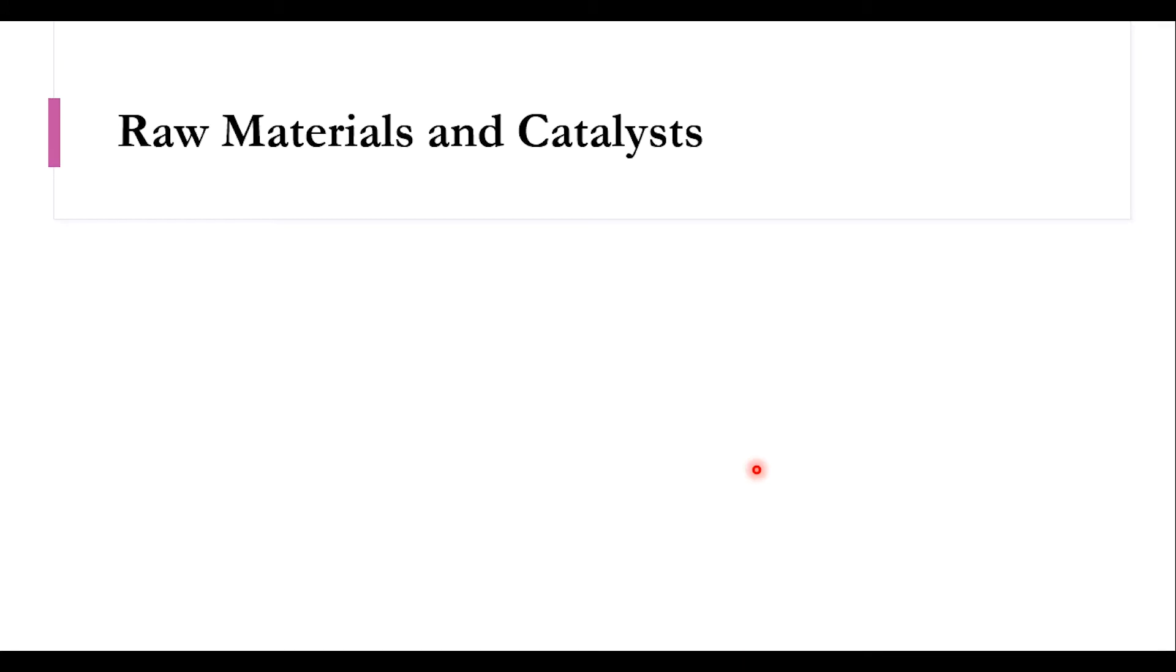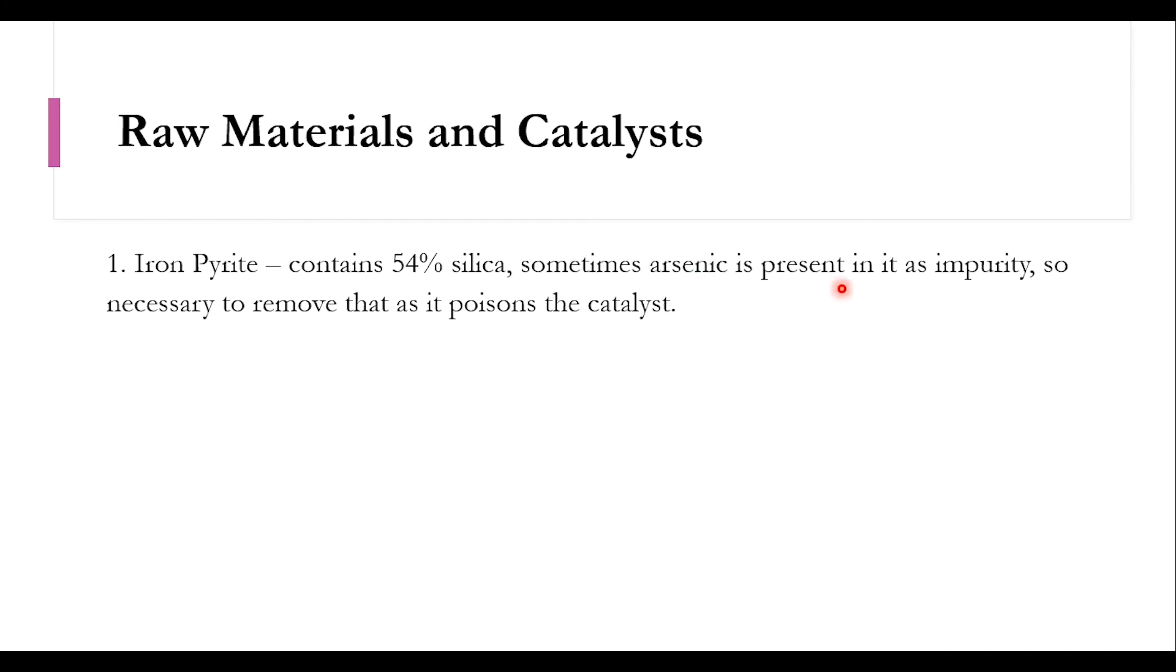For the lead chamber process, the raw materials required are three: number one is iron pyrite, which contains 54% silica, sometimes arsenic is also present as impurity so it must be removed to avoid poisoning the catalyst. Number two is air, used as a source of oxygen. Number three is oxides of nitrogen.